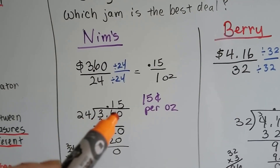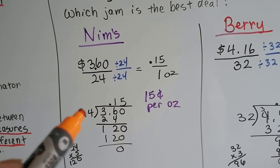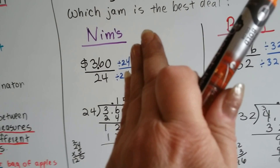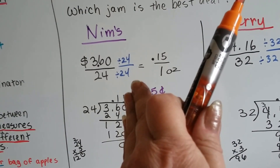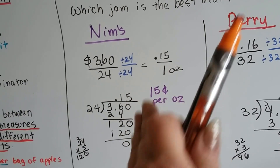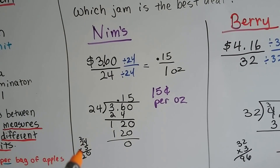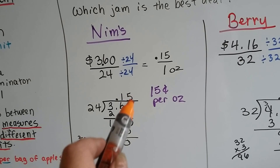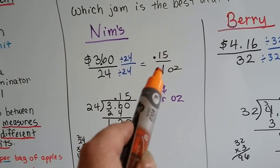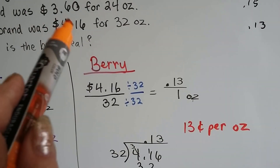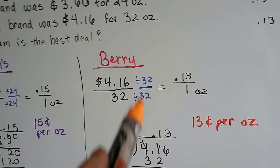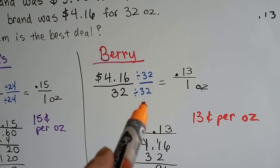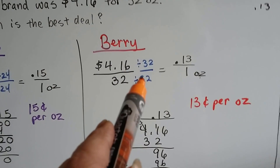24 goes into $3.60 — remember to keep your decimal point. 24 goes into 36 one time. 24 times 1 is 24; subtract to get 12. It's the zero's turn to come down. 24 times 5 is 120, so it's $0.15 — 15 cents per ounce. Now for Berry brand, we put $4.16 over 32 ounces and divide the top and the bottom by 32 — that's a form of 1, like we learned.